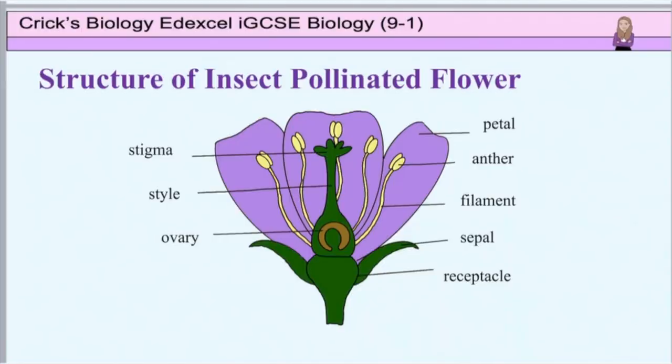I want to introduce you to the flower, the reproductive organ of the plant. Some flowers are really beautiful with bright colours and wonderful scents. These tend to be insect pollinated flowers, although some are pollinated by bats, birds and other small animals. Many flowers have petals which have UV lines on them running from the petal tip to the centre of the flower, and this guides the insects in like a landing strip for an aeroplane. Let's look at the diagram of a typical insect pollinated flower.